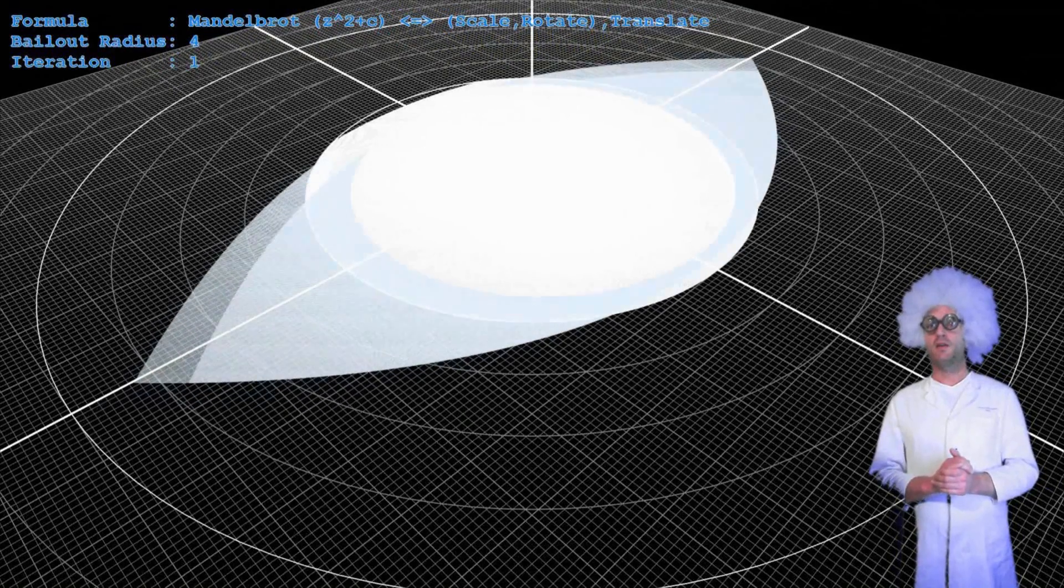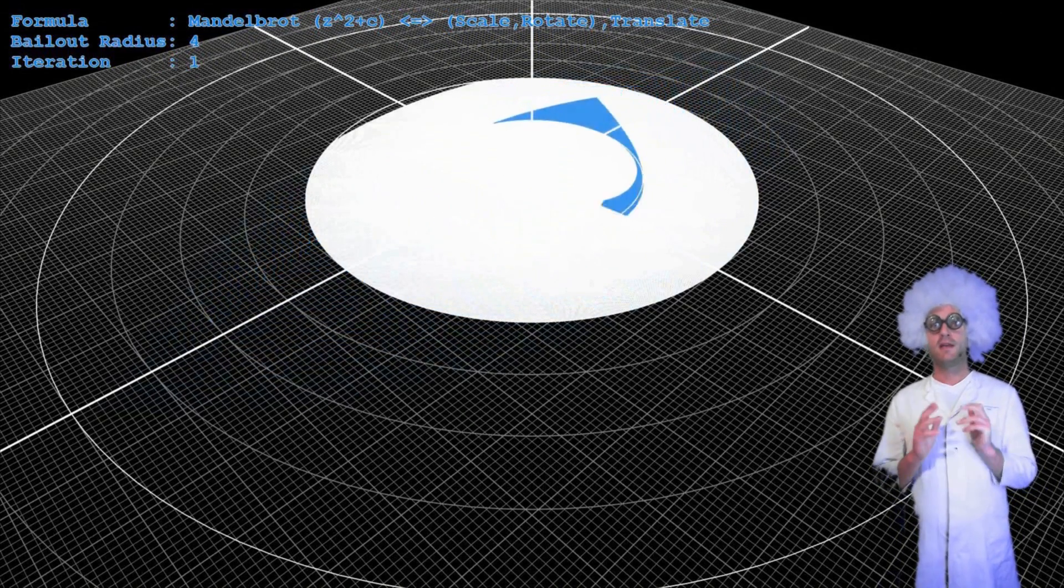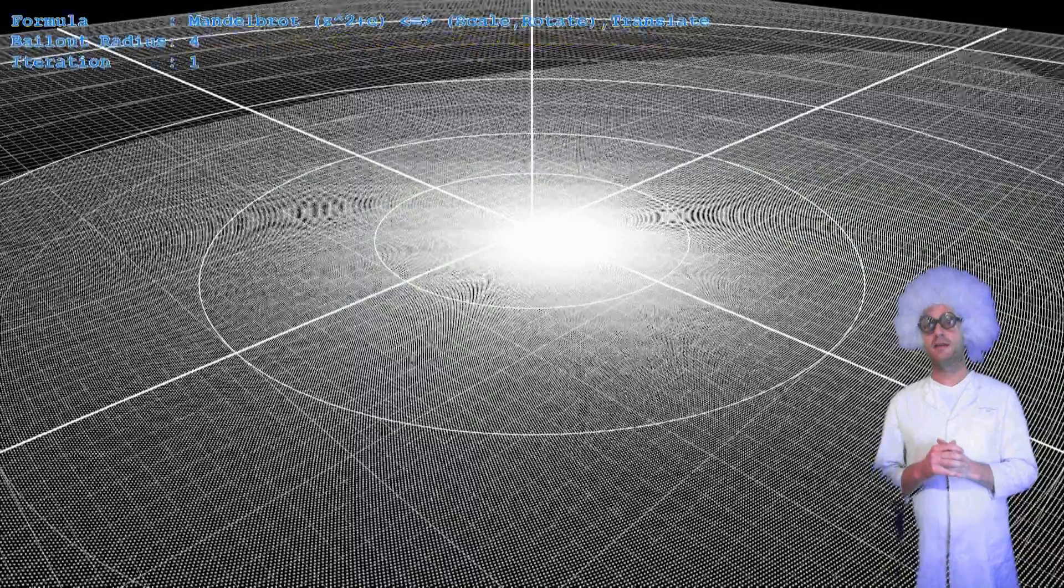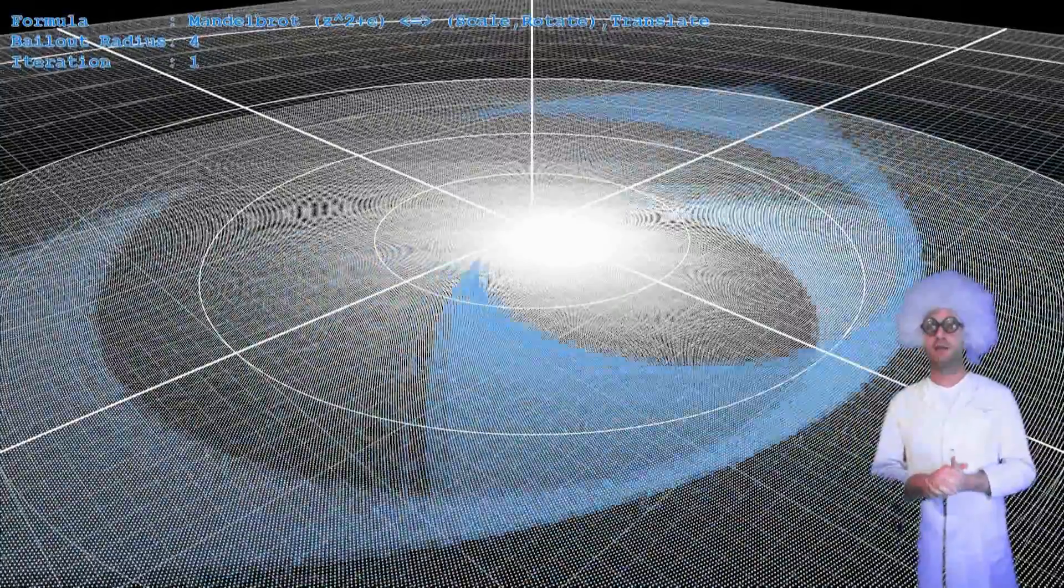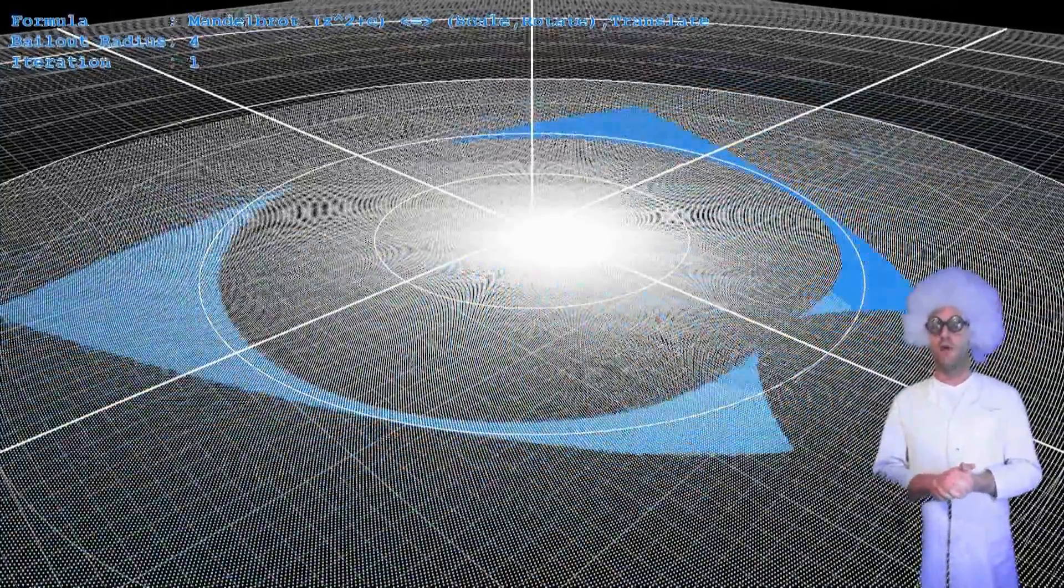The bailout step is performed, which means that points above a certain distance are colored in the current iteration color and move back to their starting locations, forming the image.